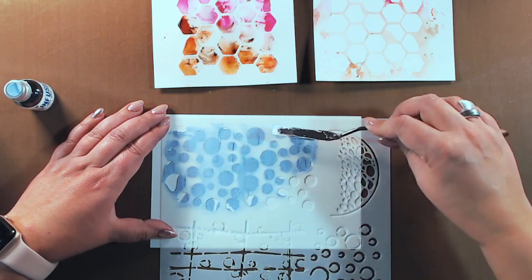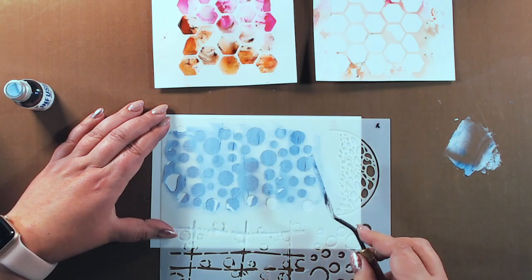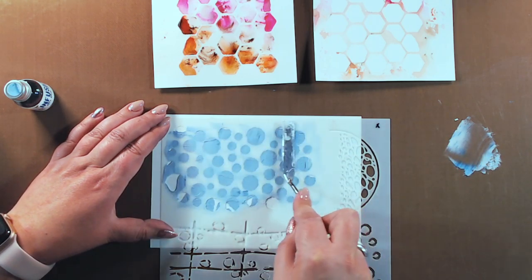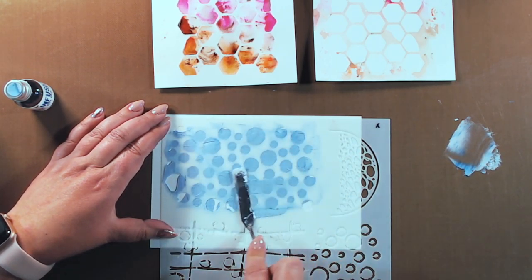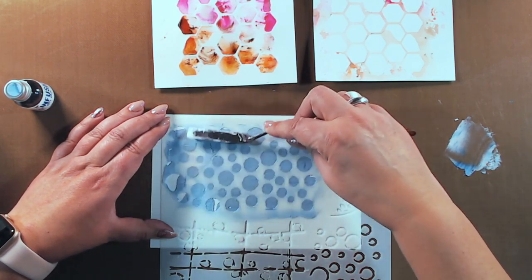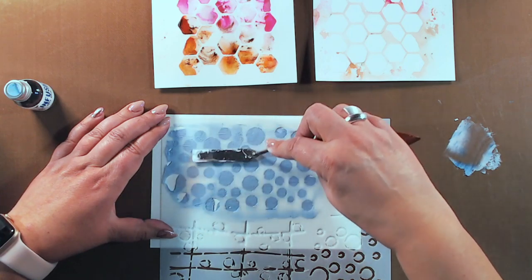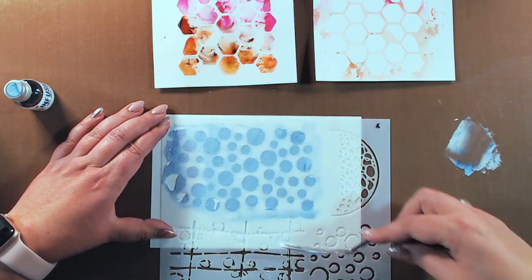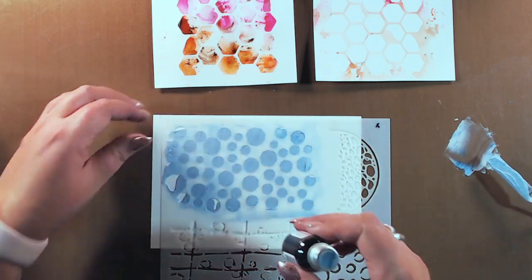For this test I used my circumambulate stencil and scraped the medium over the circles. I could already see that I had quite some coloring considering I only used a little bit of powder. My medium is basically blue now, so the infusions are highly pigmented.